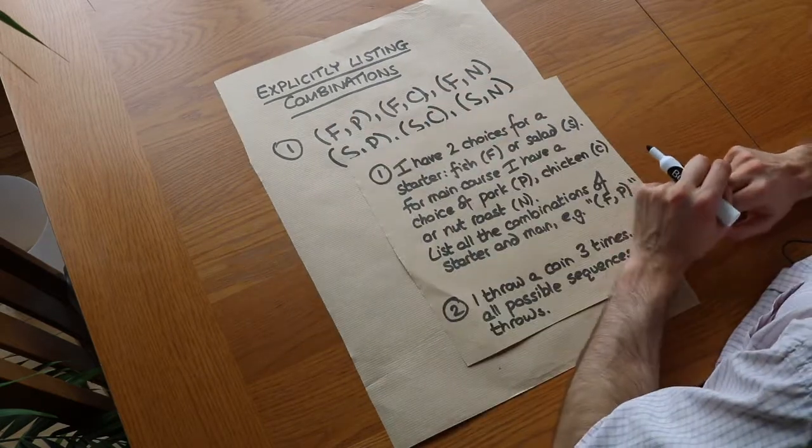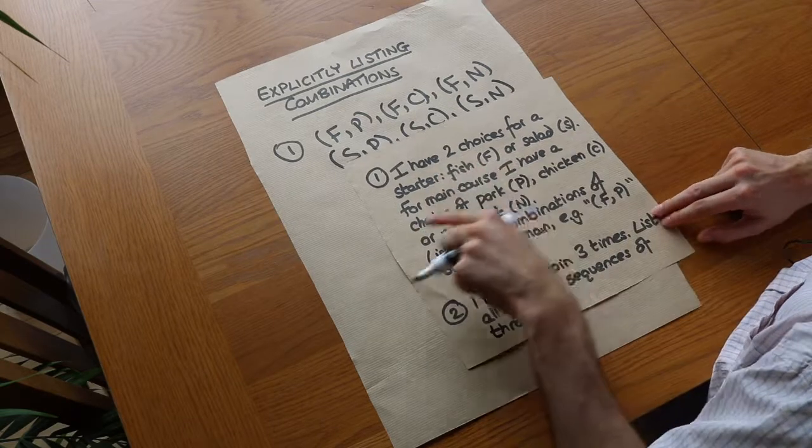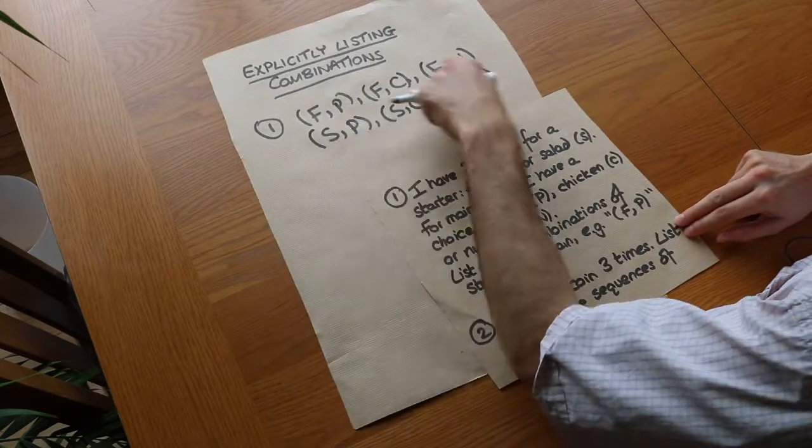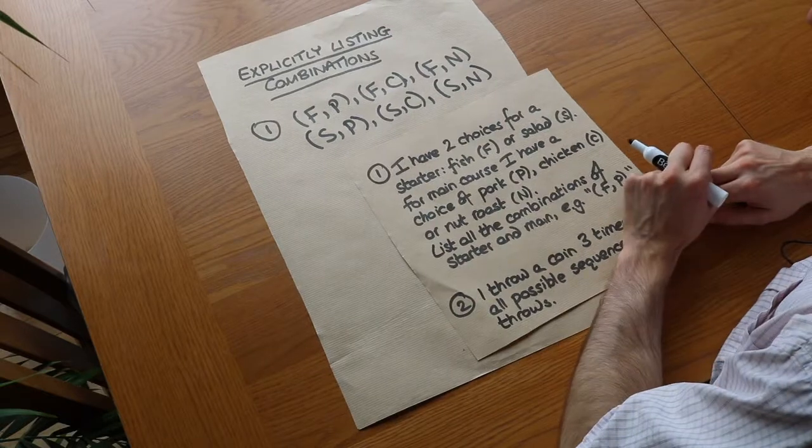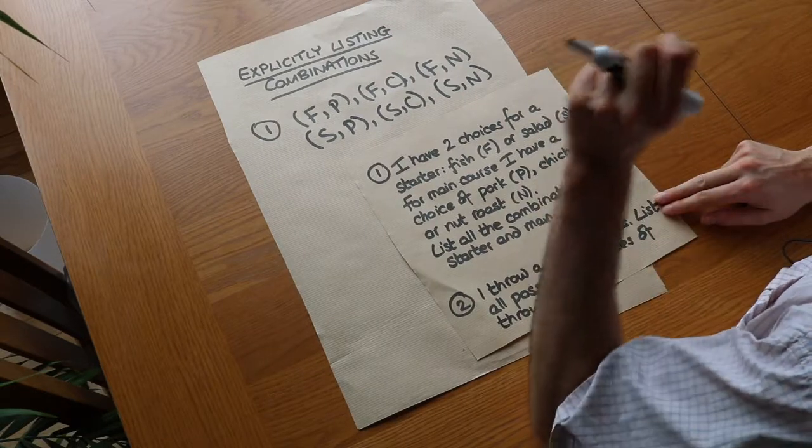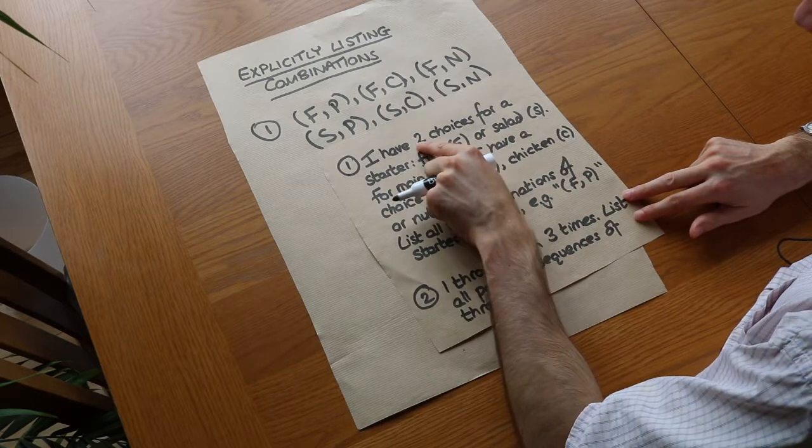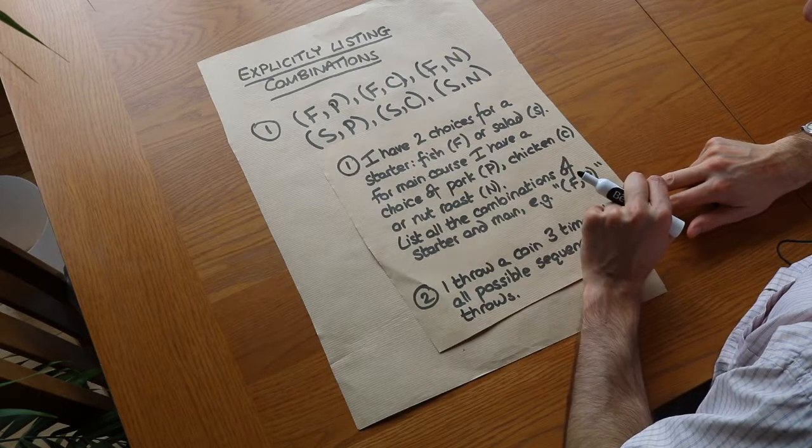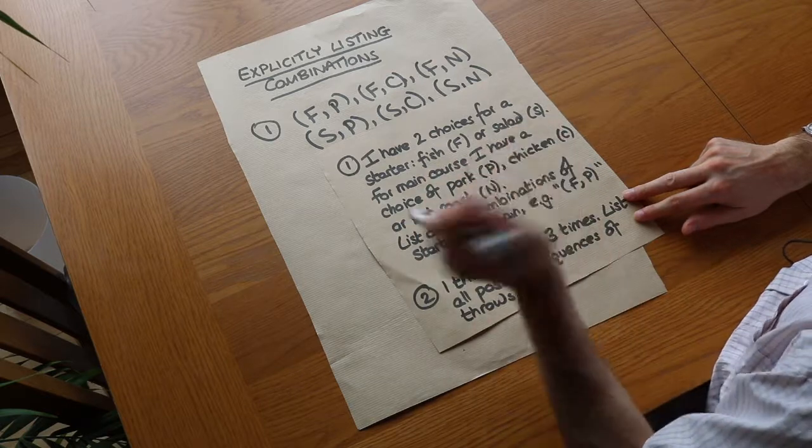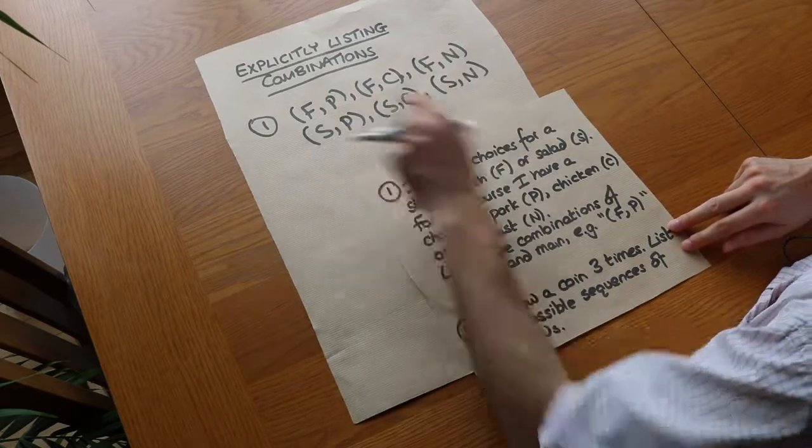So we've listed all the possible combinations of starter choice and main course and we can see there were six possible combinations. In another video we could see how we could get that total count, the six, by just doing the number of possibilities for starter, i.e. two, multiplied by the number of choices for the main course, i.e. three. And two times three would indeed give you six.